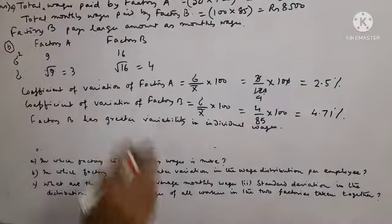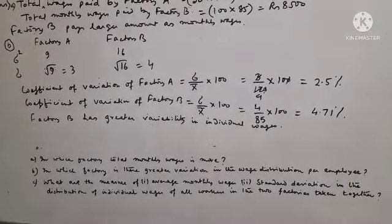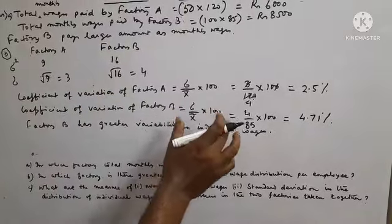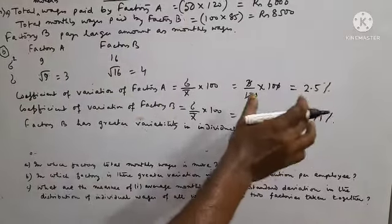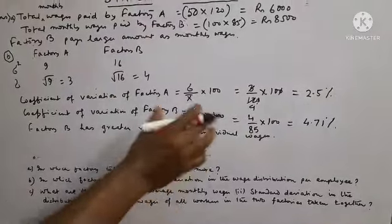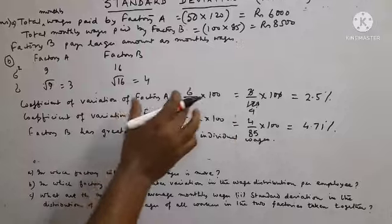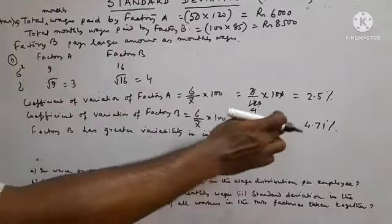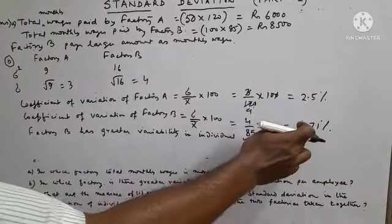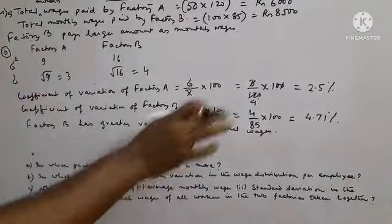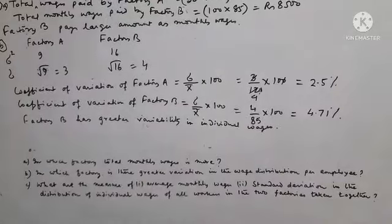Because from the theory we know, Coefficient of Variation more means more variable. That is why, since Coefficient of Variation of B is higher than that of A, Factory B has greater variability in individual wages.